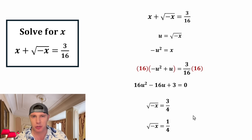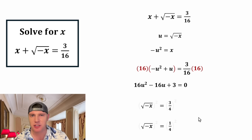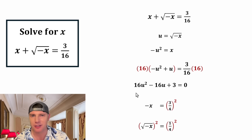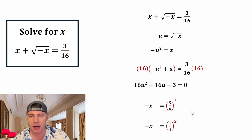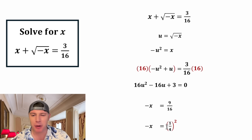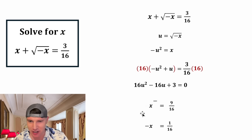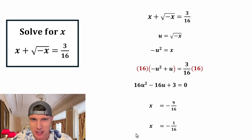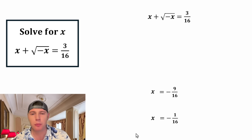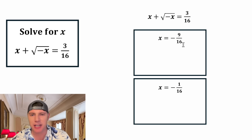In place of u, let's plug in the square root of negative x and solve for the corresponding values of x. For each equation, let's square both sides — the square root and the square cancel each other out, leaving negative x. For 3 fourths squared we get 9 sixteenths, and for 1 fourth squared we get 1 sixteenth. Multiplying both sides by negative 1, we get two possible values of x: x equals negative 9 sixteenths, or x equals negative 1 sixteenth.